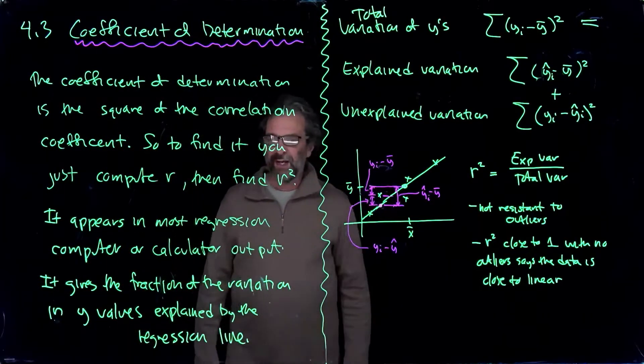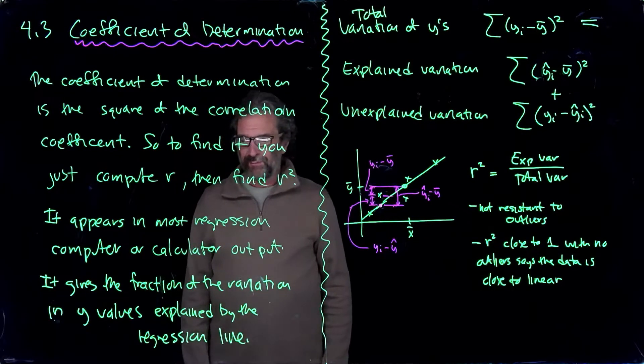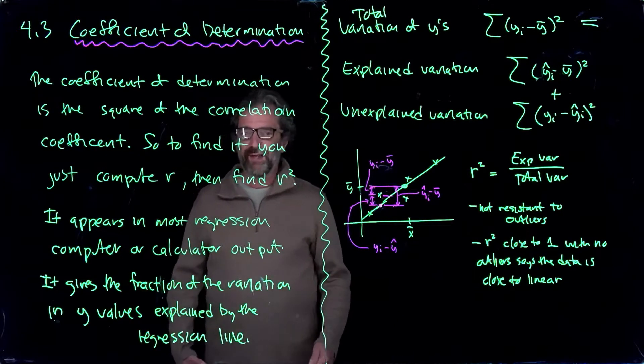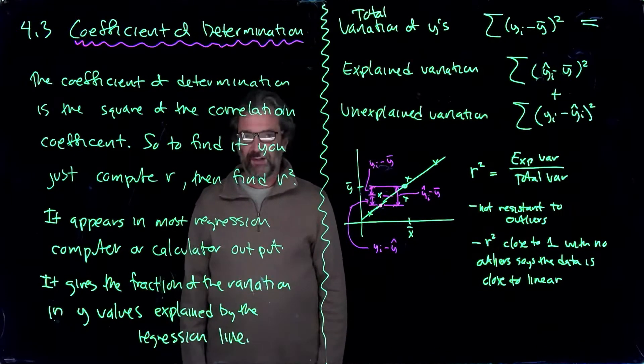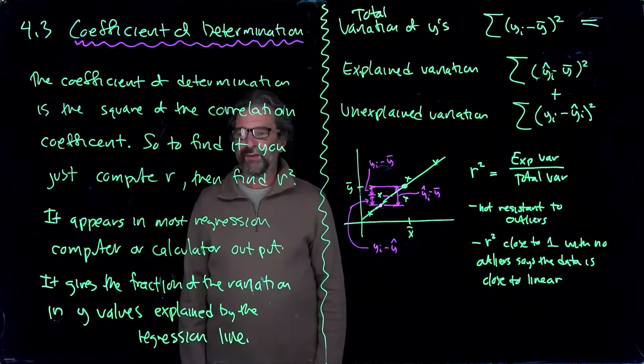So if you see an r squared of 0.9, 90% of what's going on, the way the y values are being predicted by the x, 90% of that's predicted by the regression line. That would be a good thing to see if you're trying to use the line to model the data.